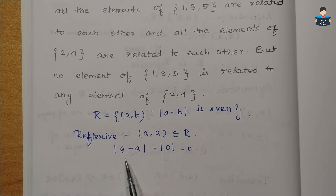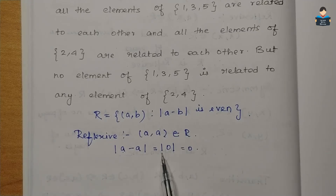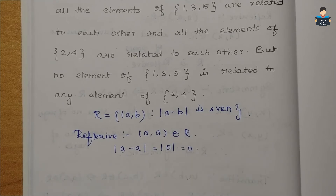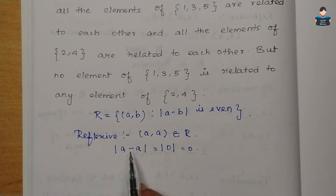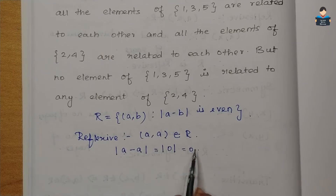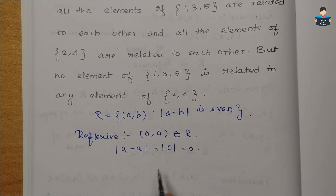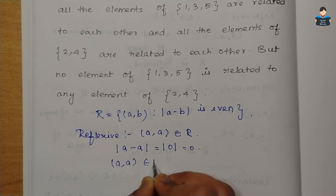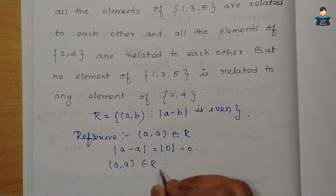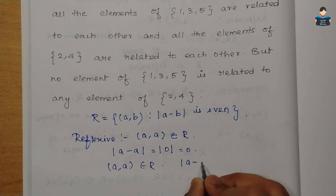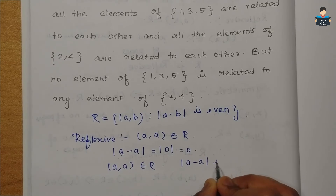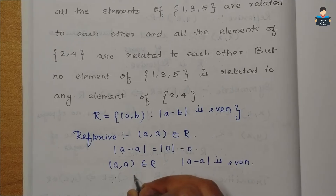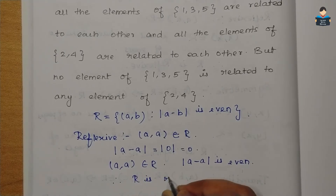So modulus of 0 is 0. Since the same numbers subtract to give 0, and 0 is even, (a, a) belongs to R, and modulus of a minus a is even. Therefore, R is reflexive.